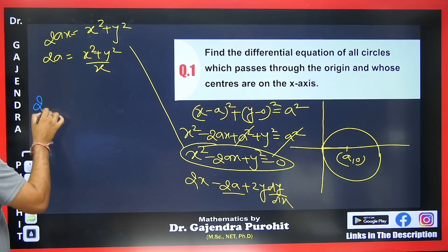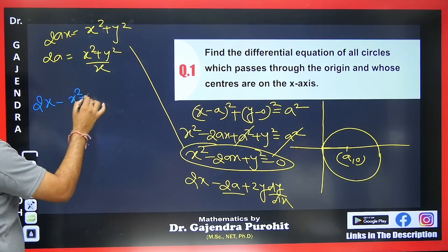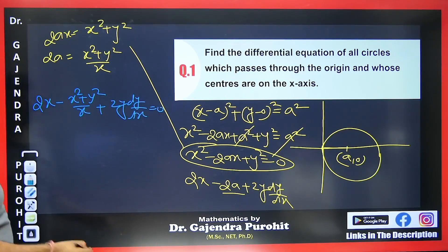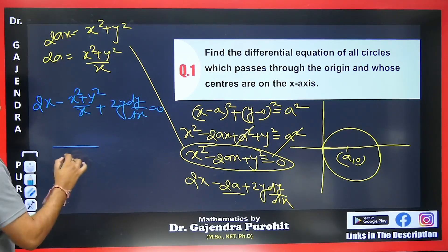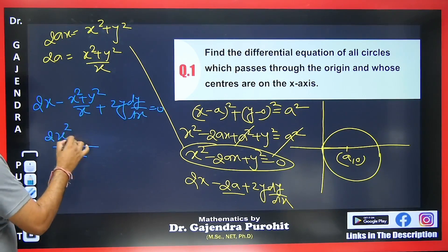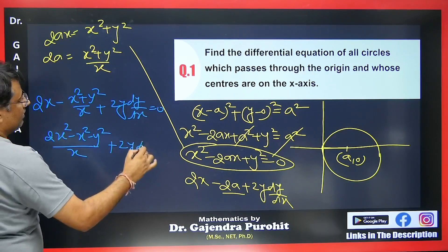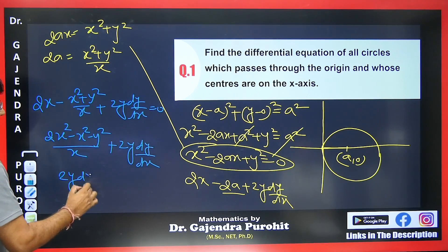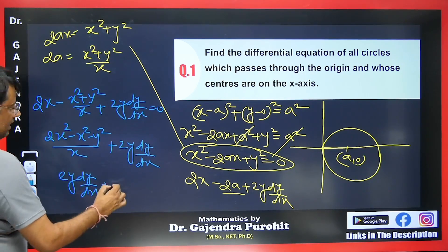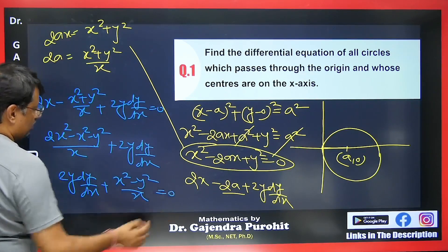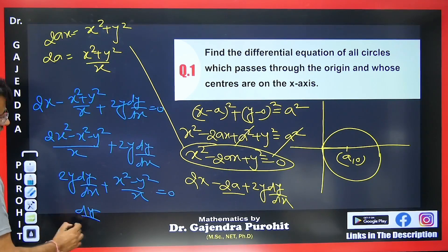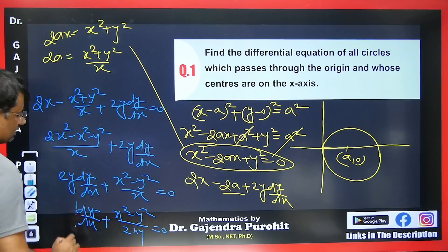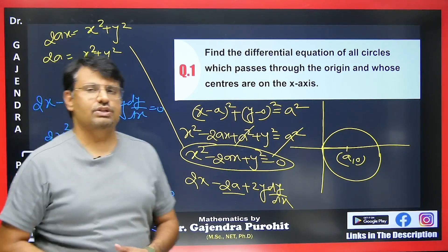Differentiating x² − 2ax + y² = 0 gives 2x − 2a + 2y·(dy/dx) = 0. Solving for 2a: 2a = (x² + y²)/x. Substituting back and simplifying by taking LCM as x, x² terms cancel, yielding the differential equation dy/dx + (x² − y²)/(2xy) = 0.